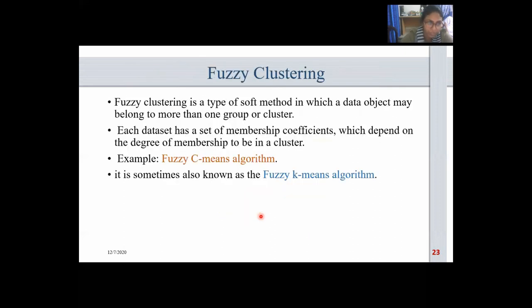Fuzzy clustering is a type of soft method in which a data object may belong to more than one group or cluster. Each dataset has a set of membership coefficients which depend on the degree of membership in a cluster. The most common example of fuzzy clustering is the fuzzy c-means clustering algorithm.